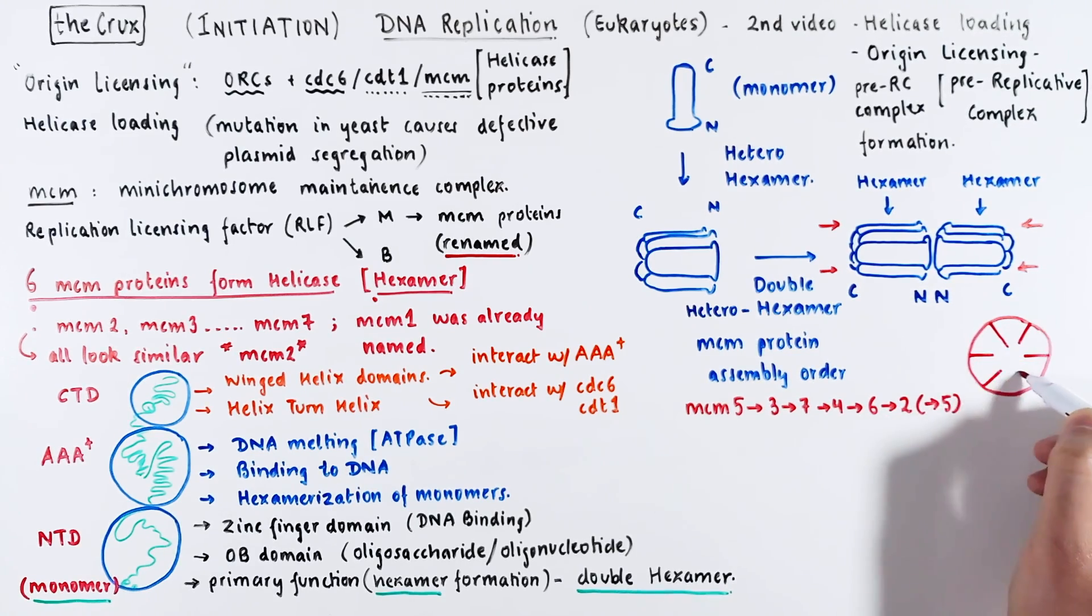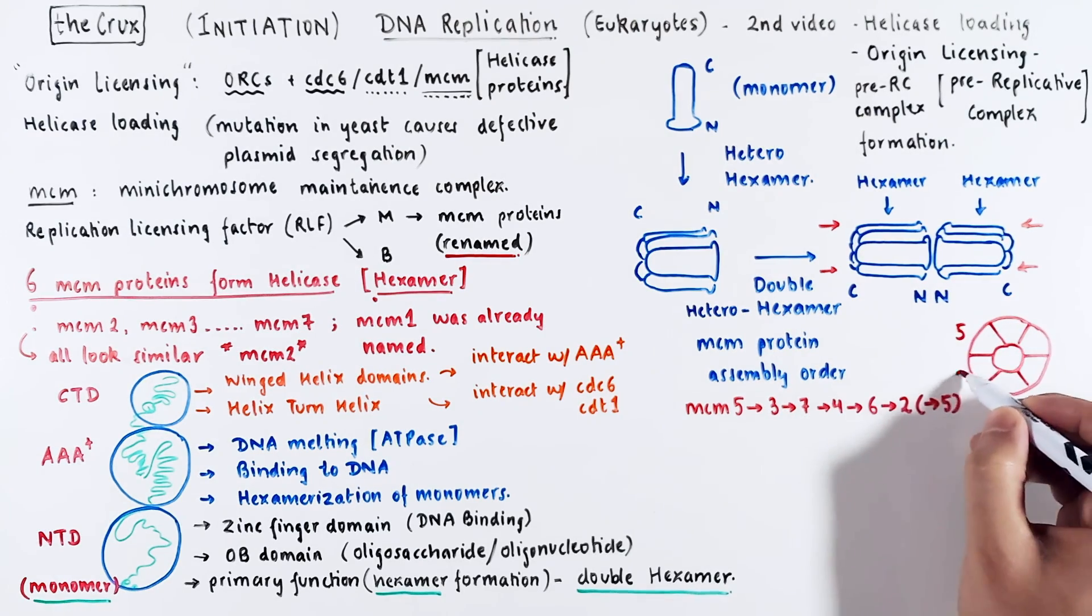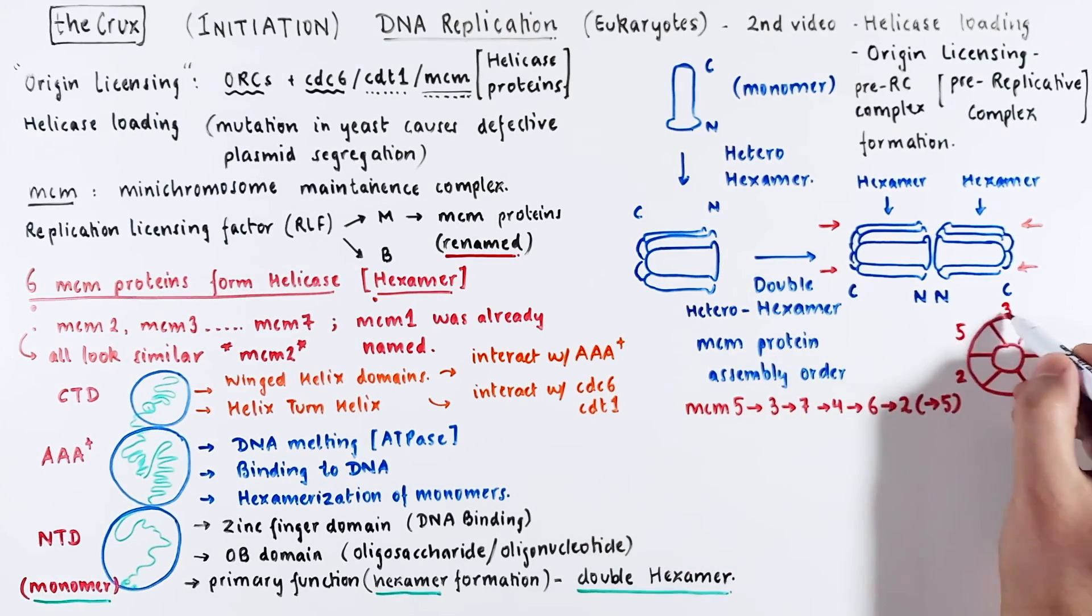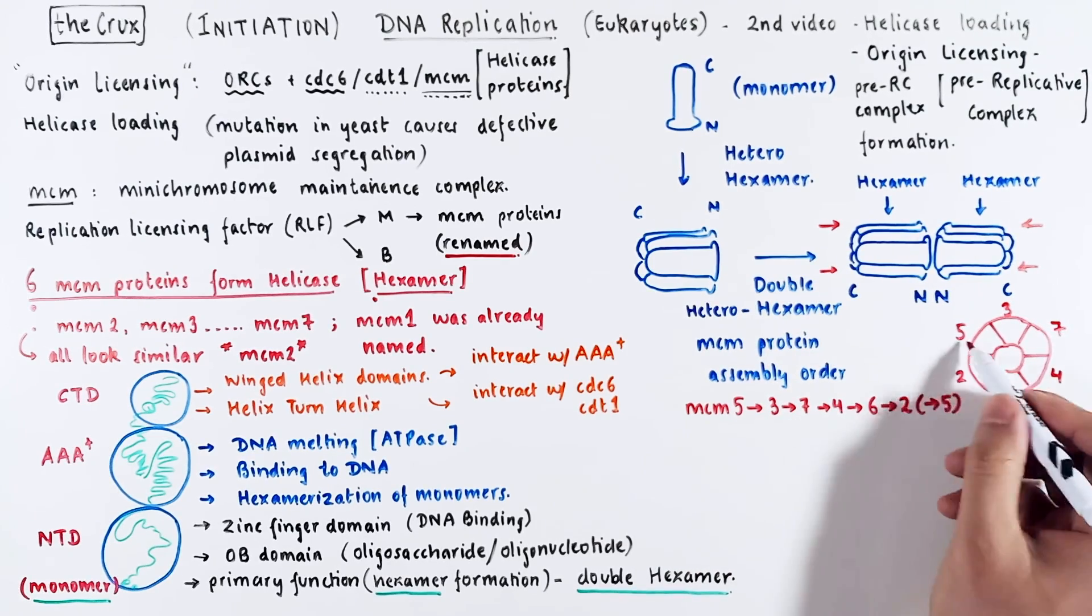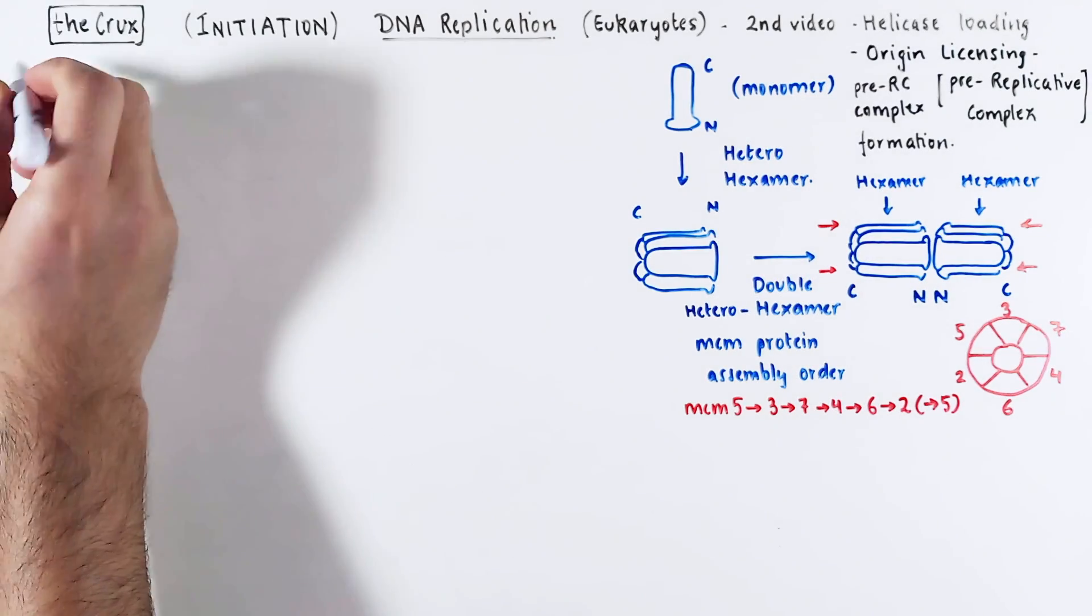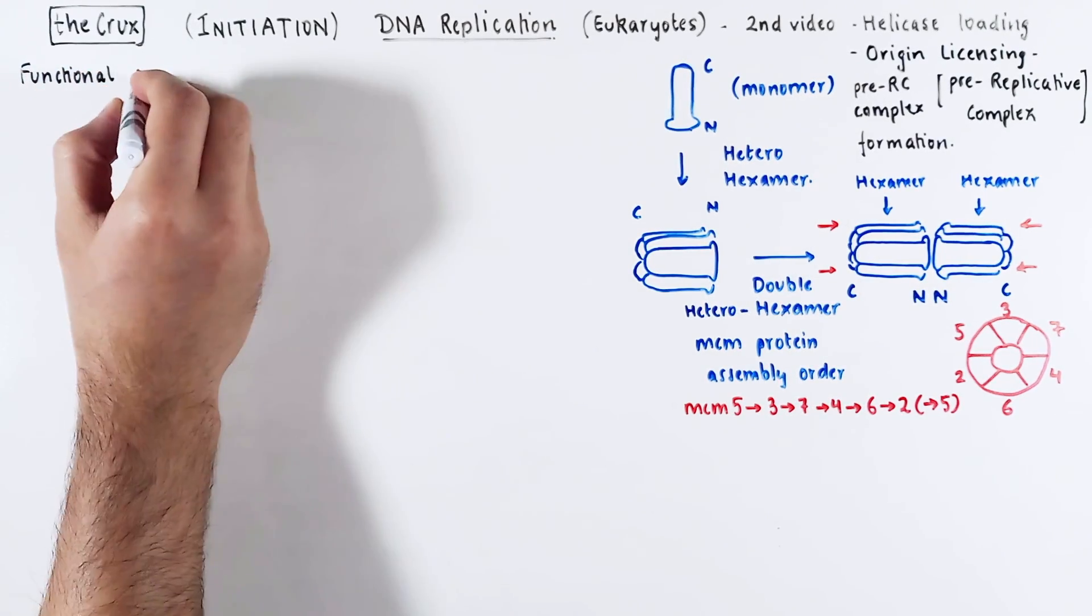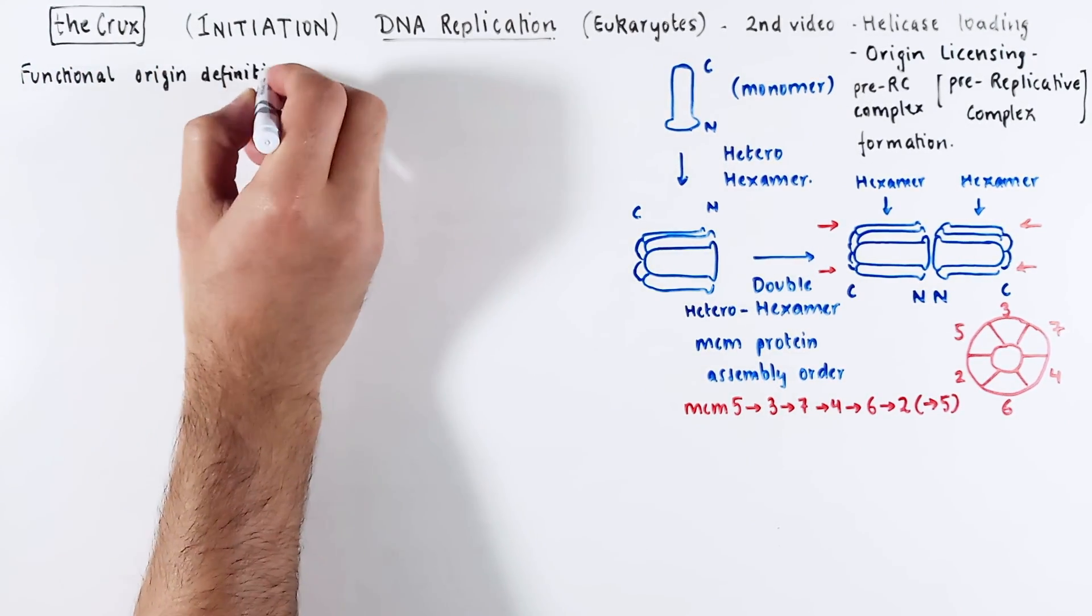Which means that in terms of helicase, if you look at it from the side view, it will look like a ring. And the assembly order reflects that. MCM-5 and MCM-2 are next to each other. MCM-3 is then next to 5, then 7, 4, and then 6, and then 2 and 5 are back-to-back. Now, let's pick up where we left off in video 1, the functional origin definition.